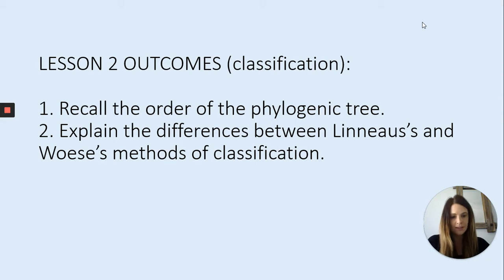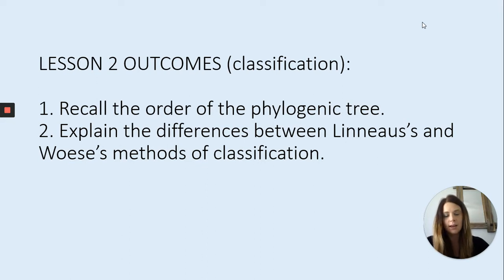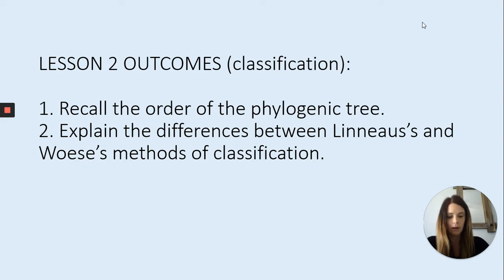So, in topic B6, towards the end of the topic, this is one that likes to crop up in exams unexpectedly. What I'd like you to know by the end of this lesson is to be able to recall the order of what we call the phylogenic tree, and to explain the differences between Carl Linnaeus' and Woese's method of classification. We'll go into those throughout the lesson.